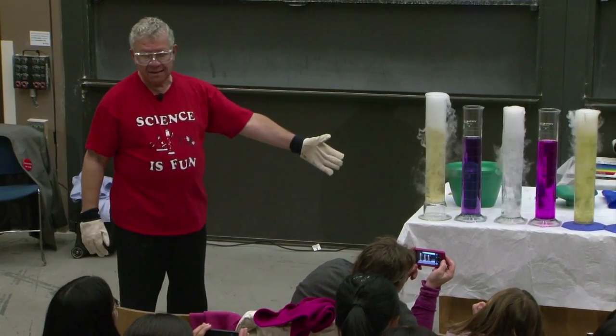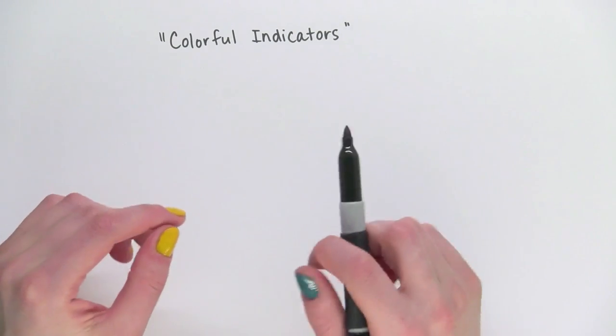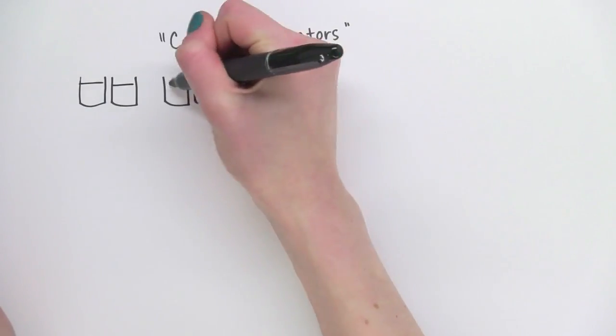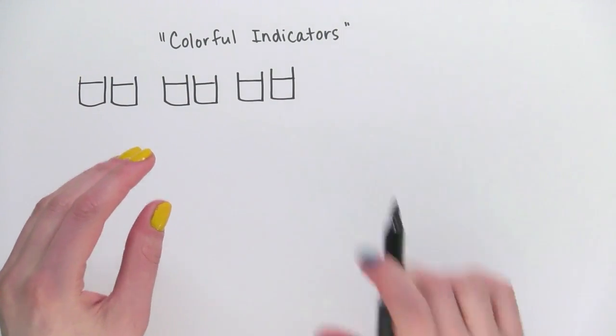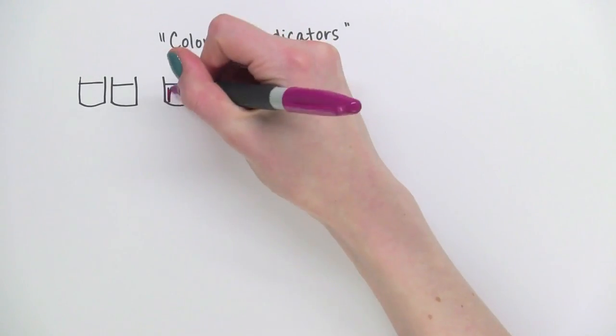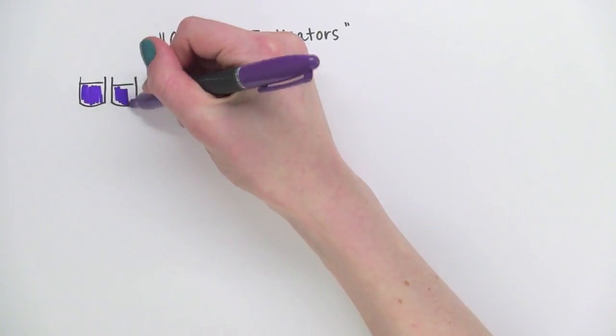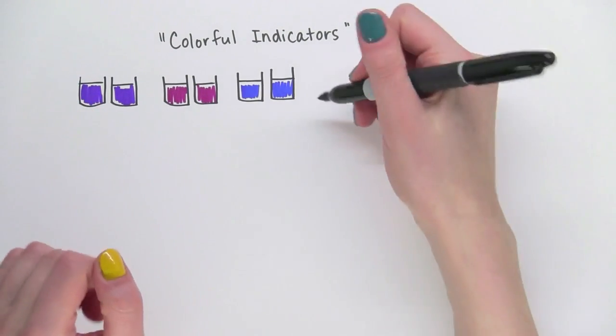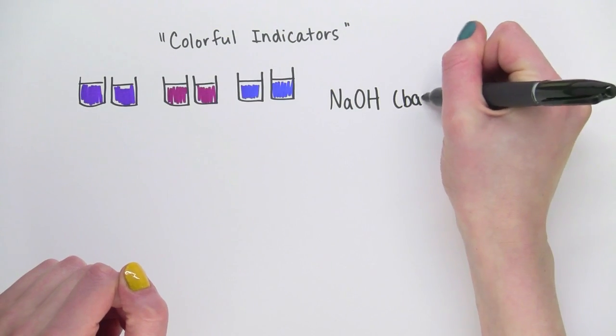So these are dyes that change color when the pH of the liquid changes. So let's break down what's happening in these cylinders. There's six of them. And each set is a different color because there are different acid-base indicators inside them. So this set starts out blue. This one starts out pink. And the final one is purple. And every cylinder contains a few drops of sodium hydroxide, which is a base. NaOH, sodium hydroxide, and it's a base.